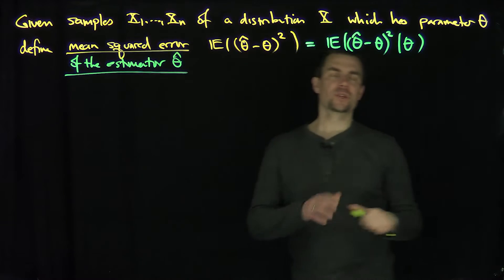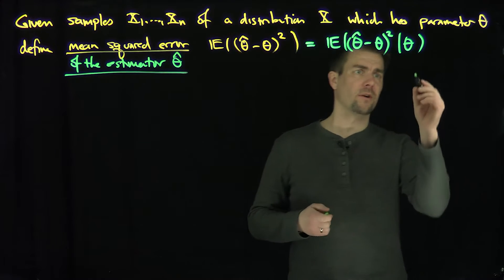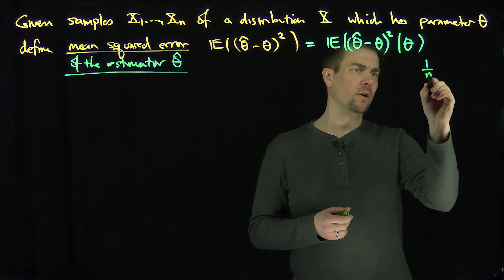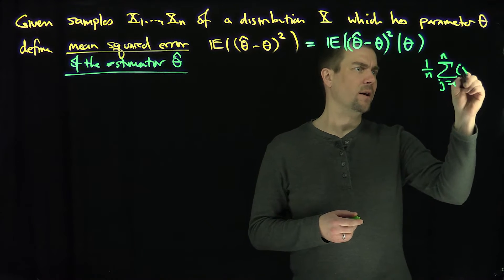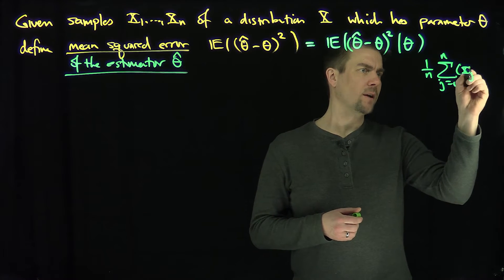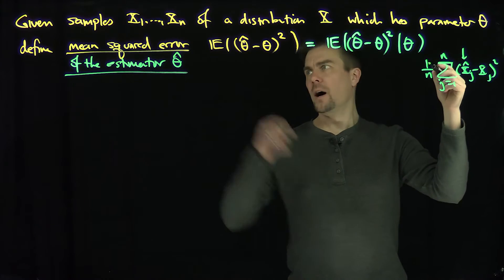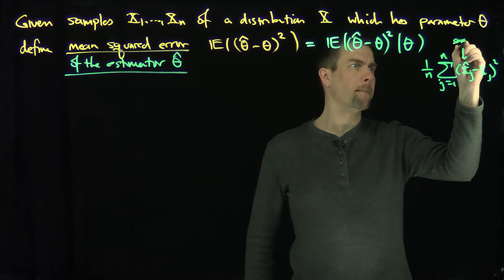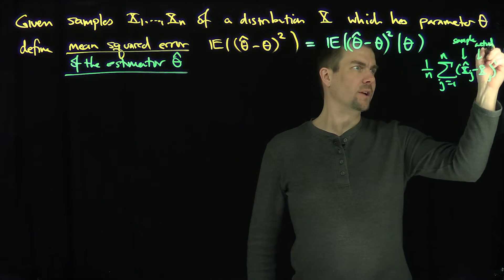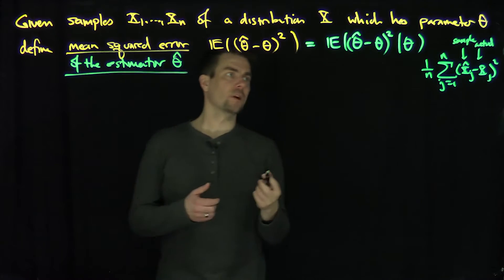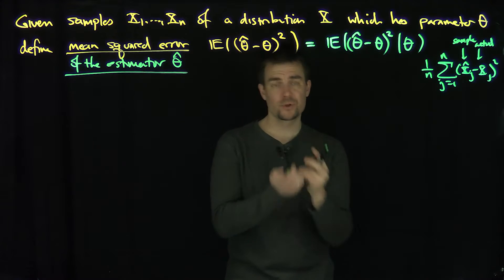What you'll oftentimes see in other texts or sources is this written as 1 over n, the sum j goes from 1 up to n of xj minus xj-hat squared, where these are the samples — the observed and predicted values. So here's the difference between the observed and the predicted, squared and averaged.